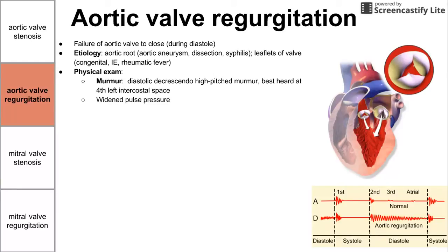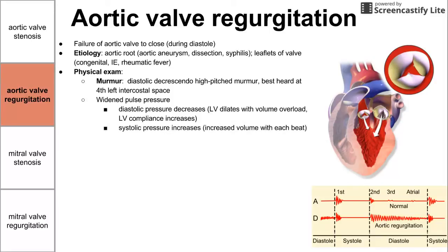We do see a widened pulse pressure, meaning lower diastolic pressure and a higher systolic pressure. Diastolic pressure decreases because our left ventricle dilates with volume overload and left ventricle compliance increases. Systolic pressure increases because we have more volume with each beat — two sources of blood coming into the left ventricle with each beat, thus increasing systolic pressure.